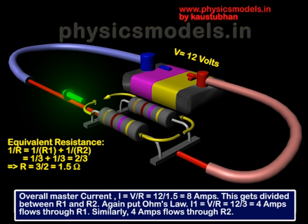So do 1/3 plus 1/3, that will be 2/3 and therefore R will be 3/2, and that's 1.5 Ohms. So that's the net effect of putting these two 3 ohm resistors in parallel. The net effect is only 1.5 Ohms.